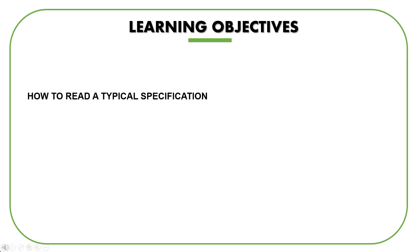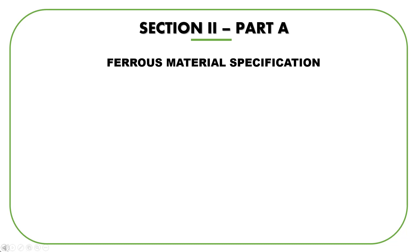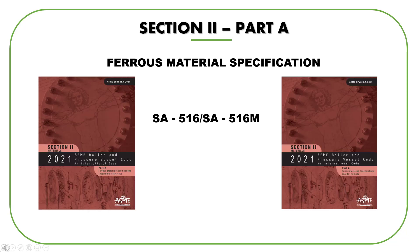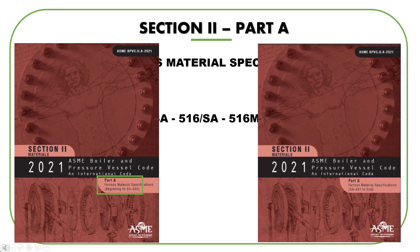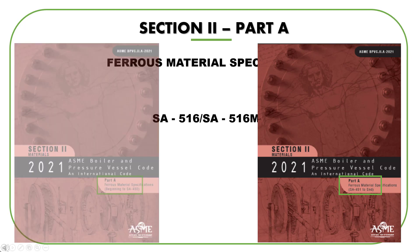Now let's move to the first objective: understanding a material specification. We are in Section 2 Part A — material specifications for ferrous materials — and we are going to see the specification for the most commonly used carbon steel plate material, SA 516. Section 2 Part A is divided into two parts due to the large number of materials. The first part contains materials up to SA 450, and the rest is in the second part. As we want to refer to SA 516, we need to open the second part. It is recommended that you open the second part of ASME Section 2 Part A and go to SA 516 while you are watching this module.